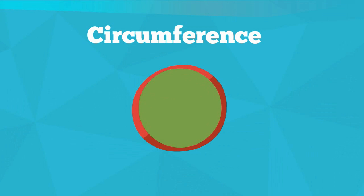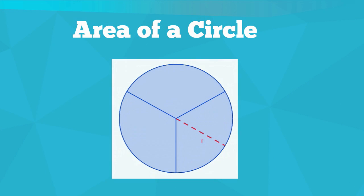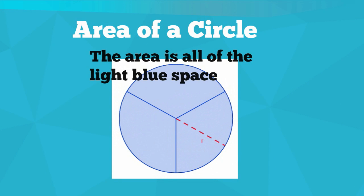Circumference is the distance around the circle. The area is the amount of space inside the circle.